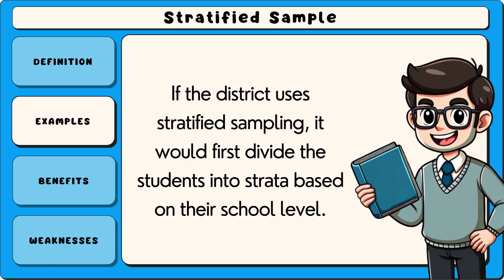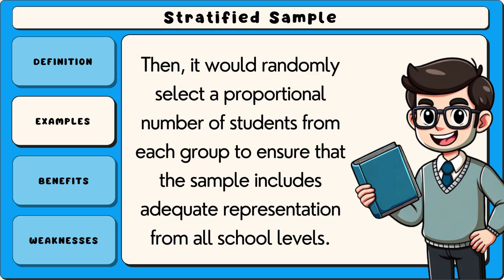If the district uses stratified sampling, it would first divide the students into strata based on their school level. Then it would randomly select a proportional number of students from each group to ensure that the sample includes adequate representation from all school levels.